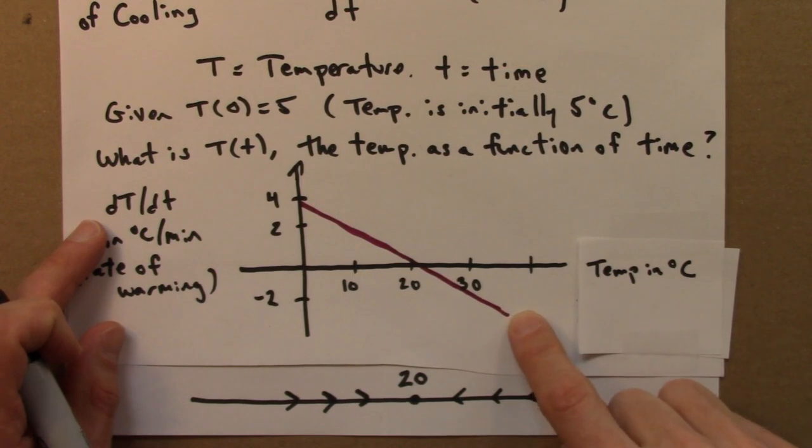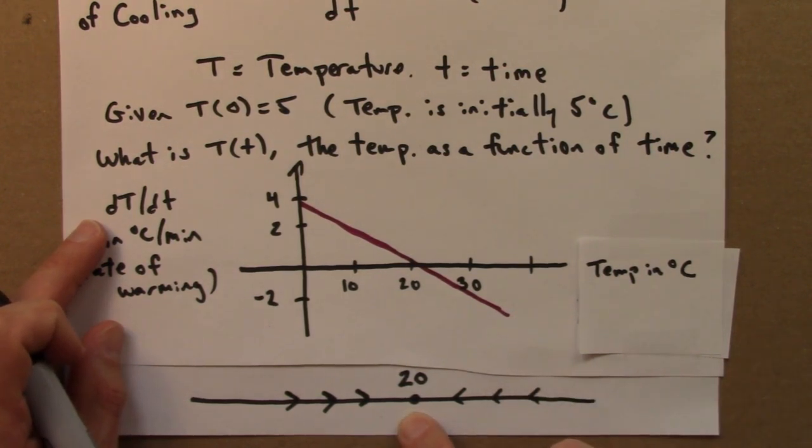So, immediately from this graph, we can get a lot of information. We see that there's a fixed point, or an equilibrium at 20, and we see that it's stable or attracting.